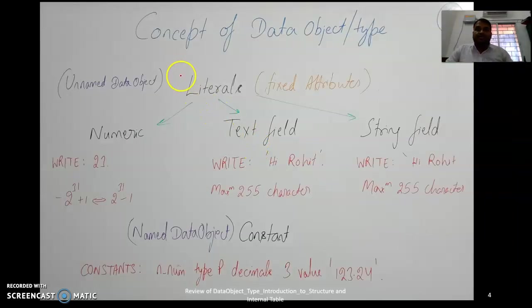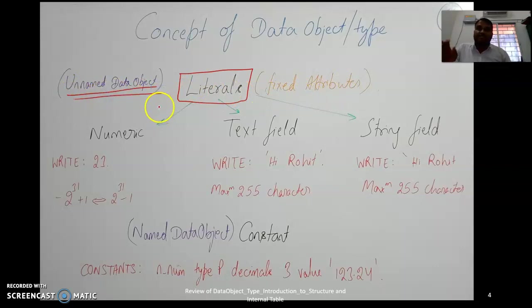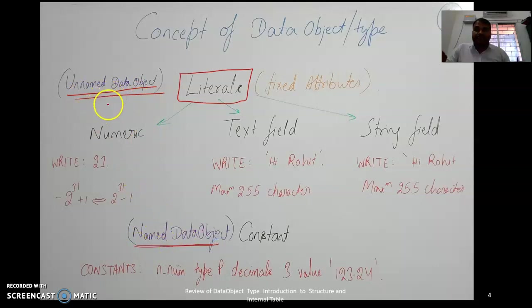Inside data objects, there is a term called literals. Literals can be defined in three types: numeric literals, text fields, and string fields. Numeric literals have a fixed attribute — they are called unnamed data objects, meaning you cannot define a separate name for them. An example is writing '23.' — this is a numeric literal displayed on screen.